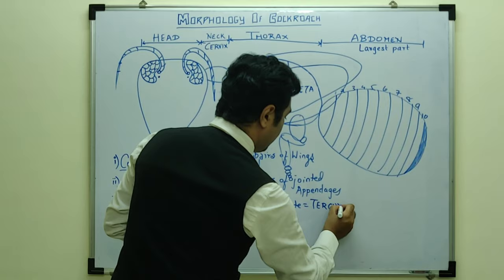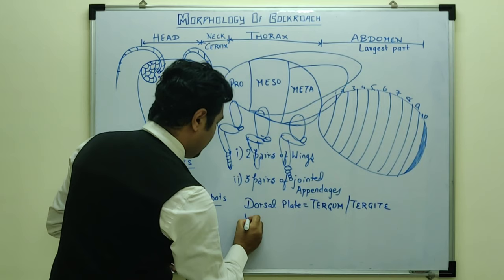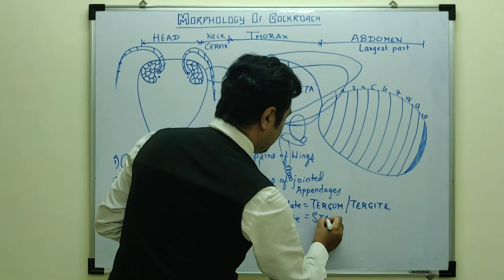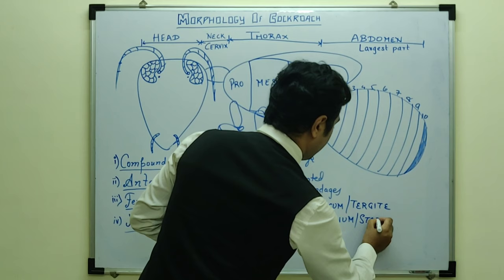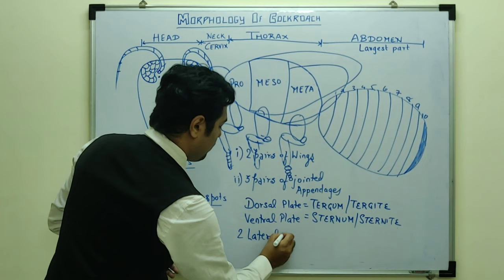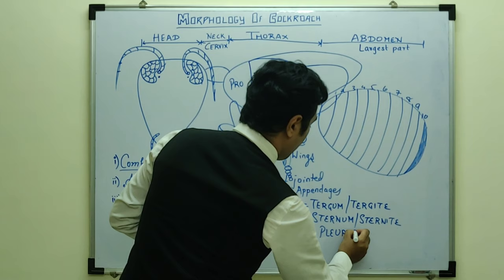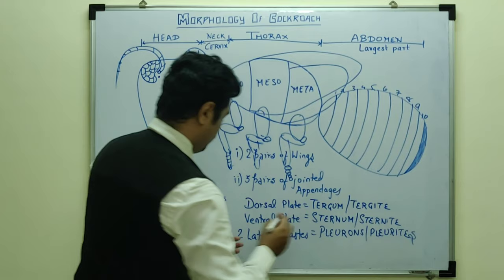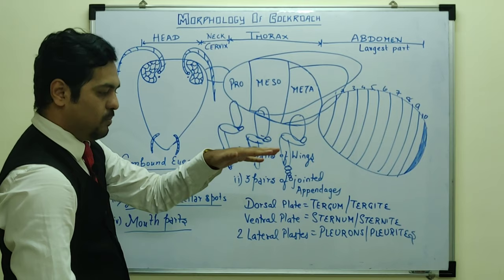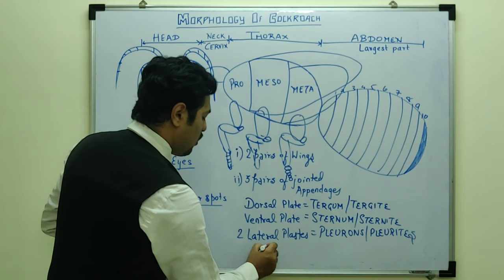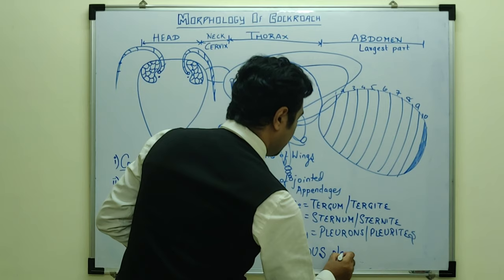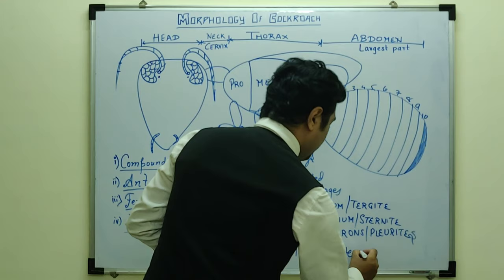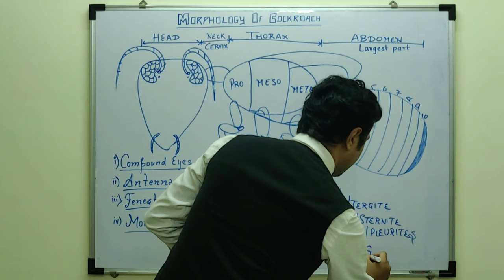In the head region, segments have jointed to form a capsule. The thorax has three segments visible, and the abdomen also has segments. These segments have plates: the dorsal plate is known as tergum or tergite, the ventral plate is known as sternum or sternite, and the two lateral plates are known as pleurons or pleurites. So there are four plates per segment.